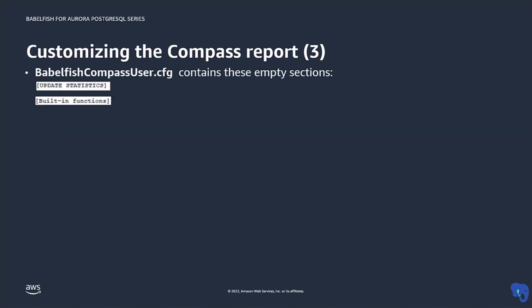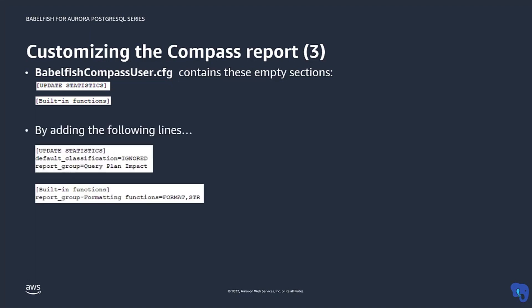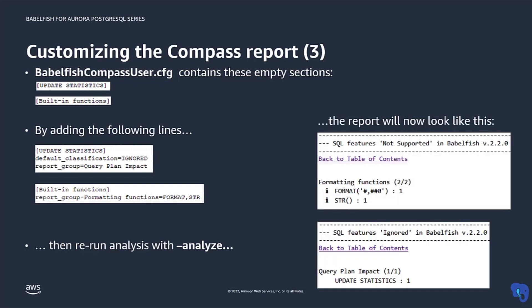Editing the BabelfishCompassUser.cfg file has to be done in a rather specific format. Basically, you have to find the sections corresponding to the items whose classifications you want to customize. In these sections, you add lines with the default classification and a report group, as shown here. When you then run the analysis again with the flag Analyze, you'll see those customizations reflected in the generated Compass report.